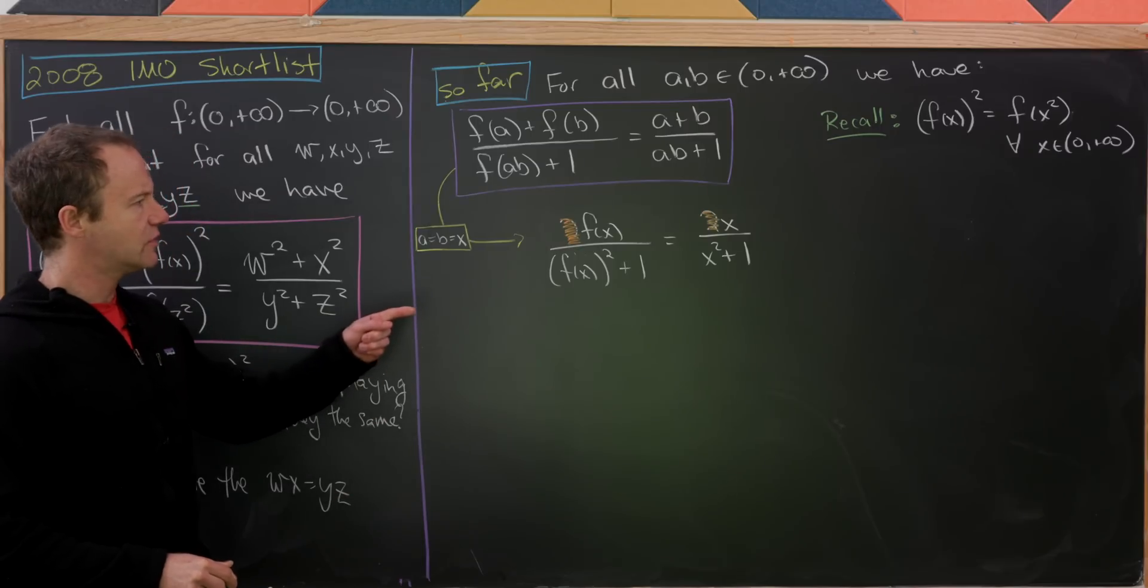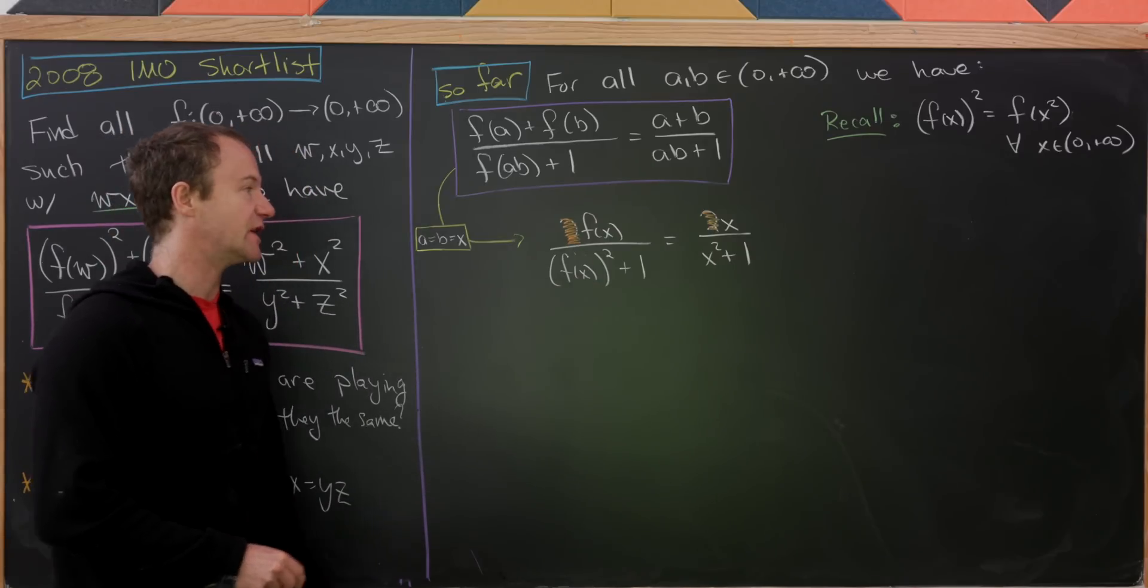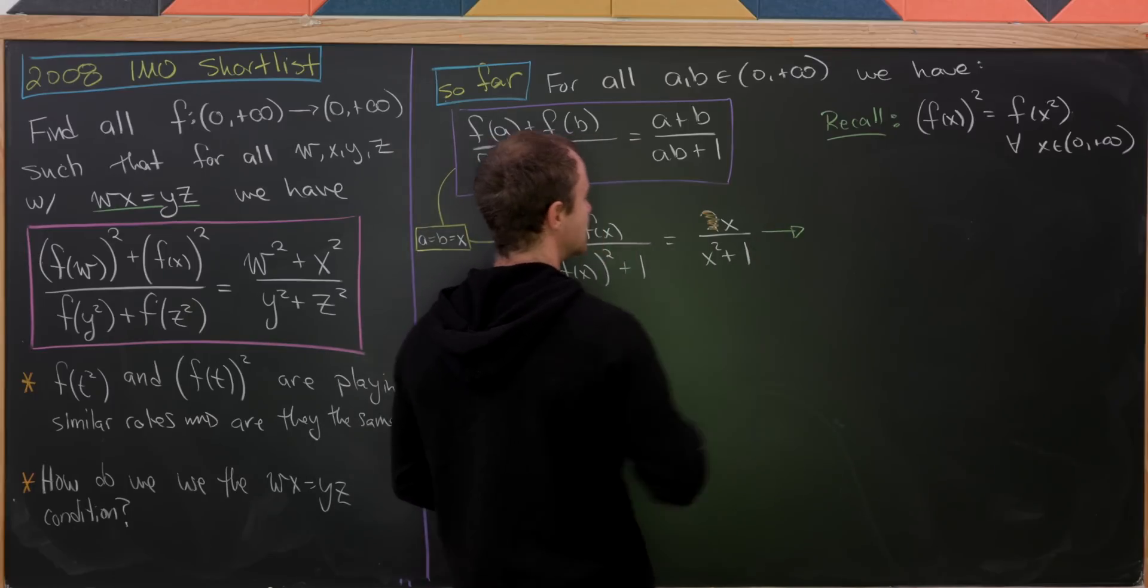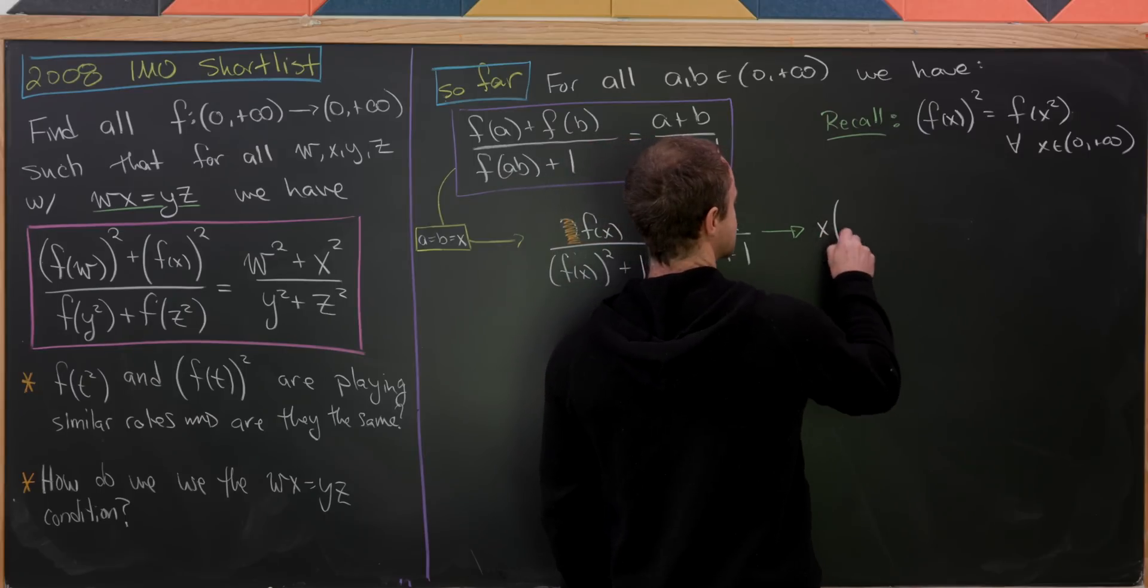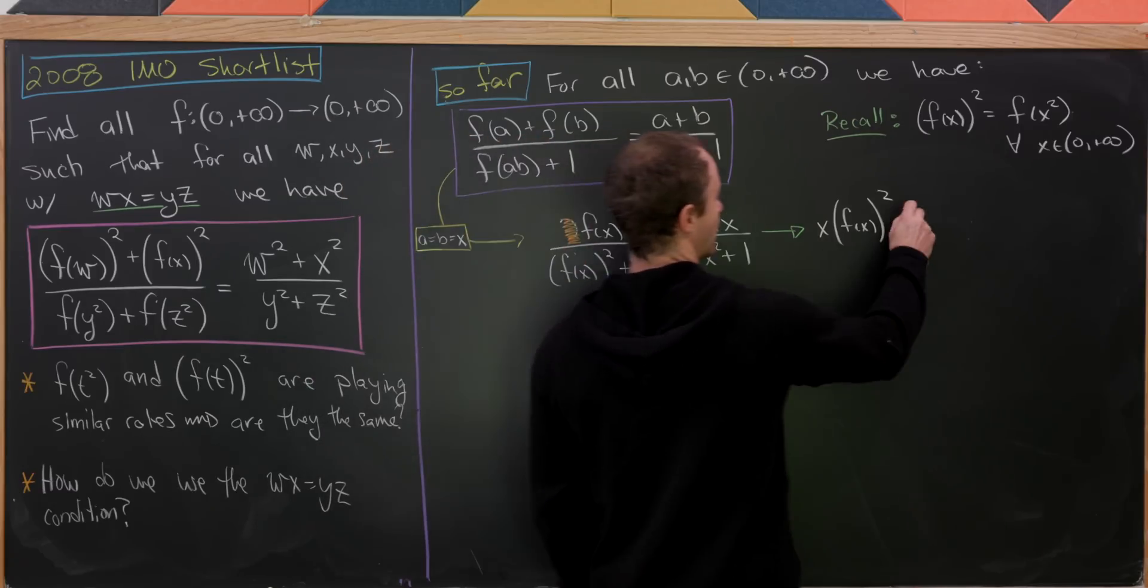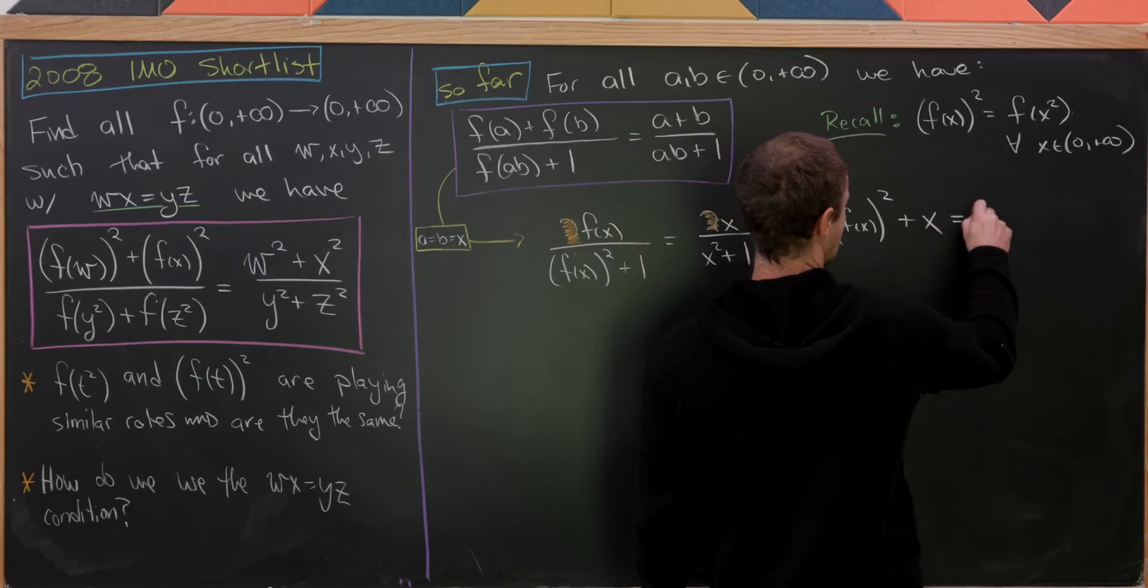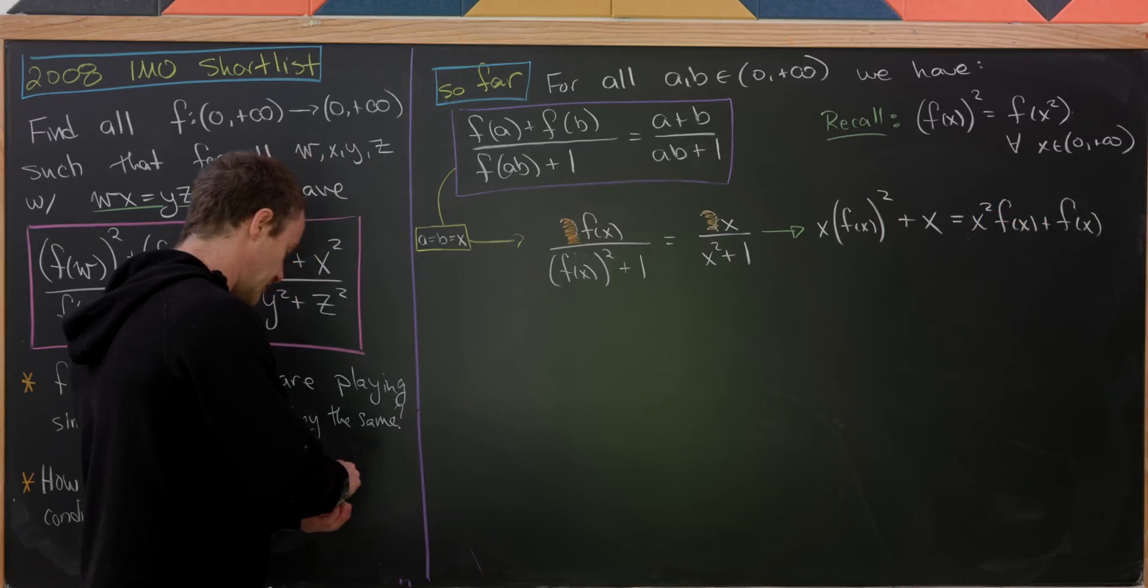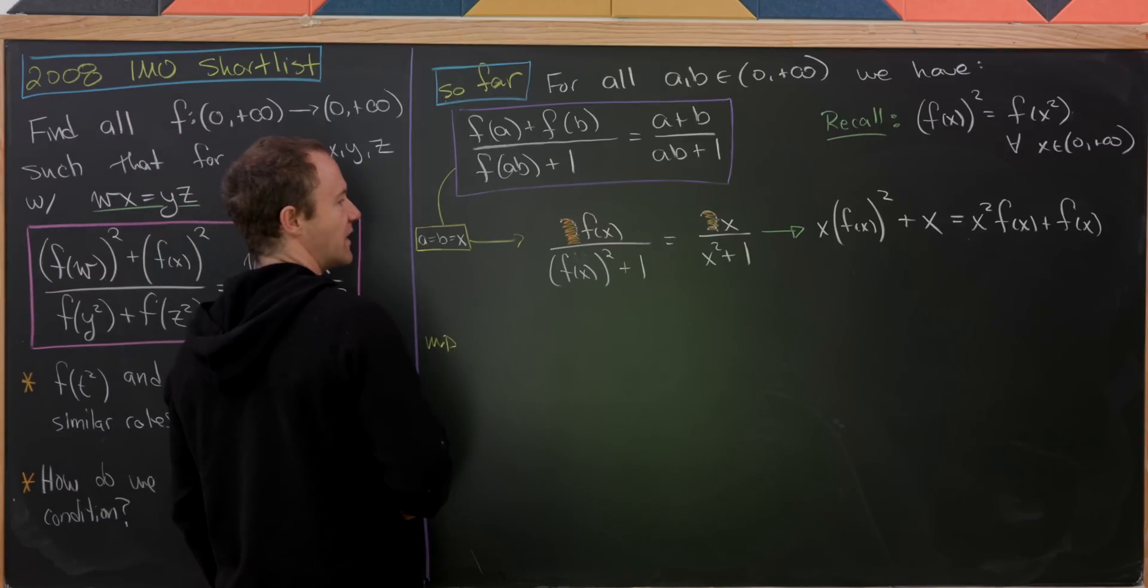And now notice that we have a quadratic equation where our variable is f(x). That's not super apparent until we cross multiply. But after cross multiplying, we're good to go and we see that. So like I said, cross multiplying will give us x times f(x)². And then what else will we have? We'll have plus x for multiplying this x through here. And that will be equal to x² times f(x) plus f(x).